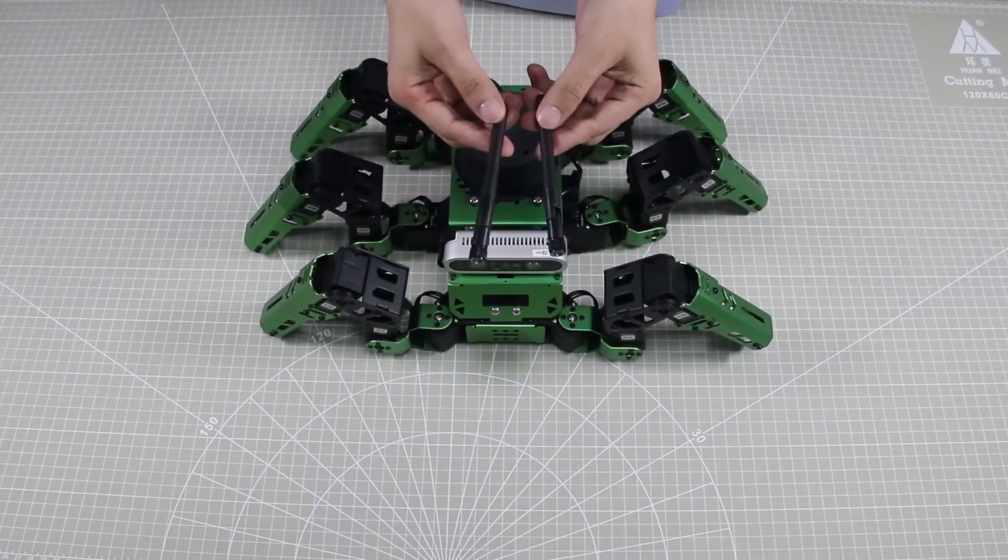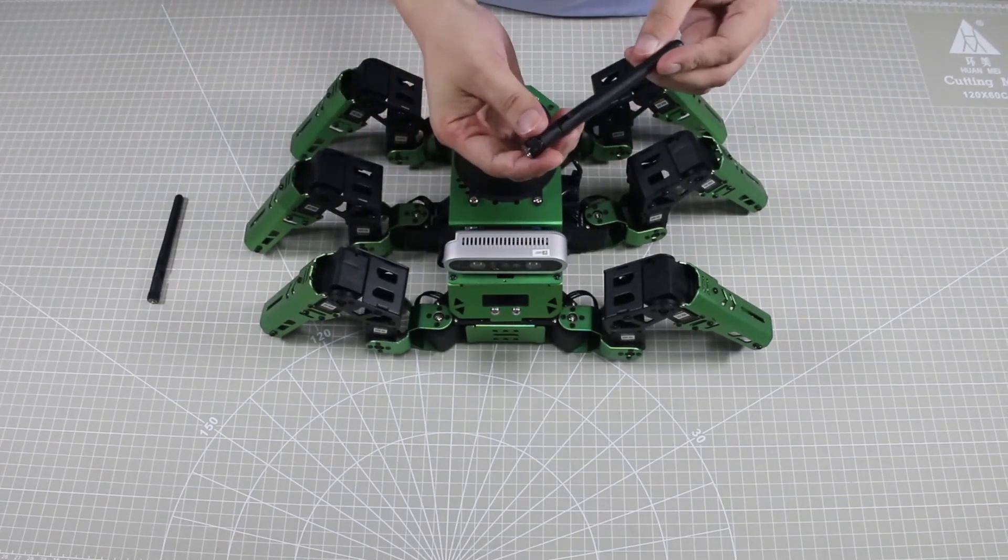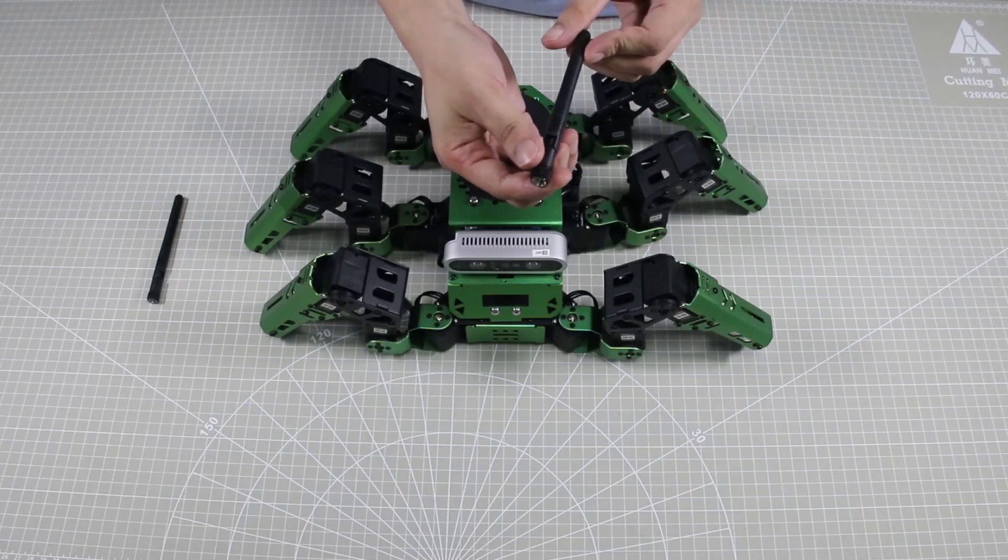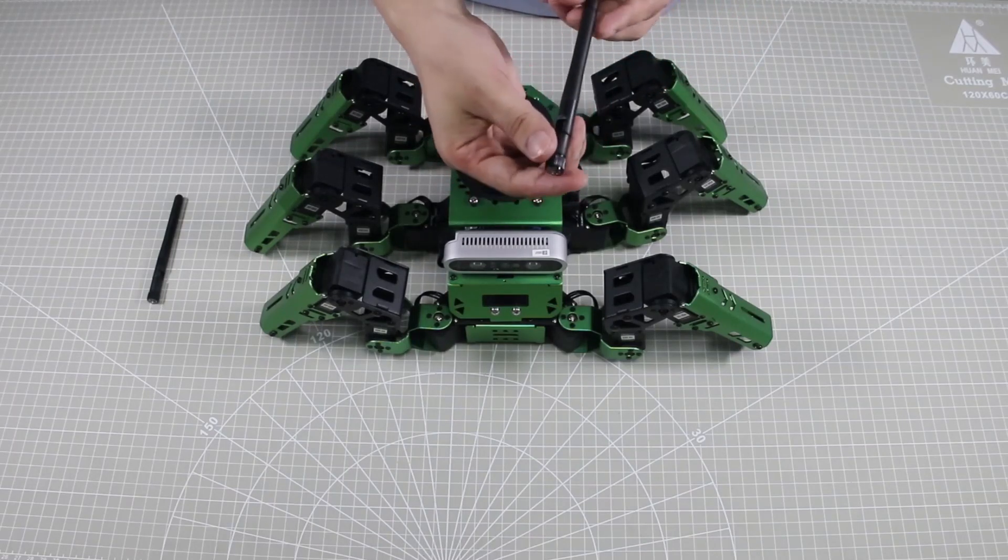Next, install the antenna. Make it straight, which makes it convenient for you to install. Then, attach it to the robot.